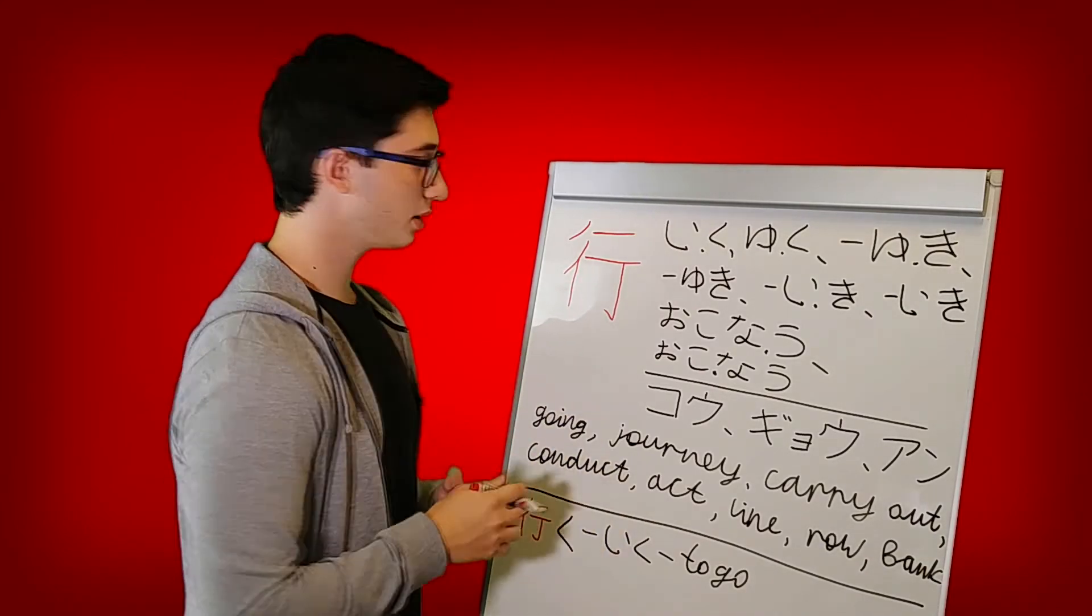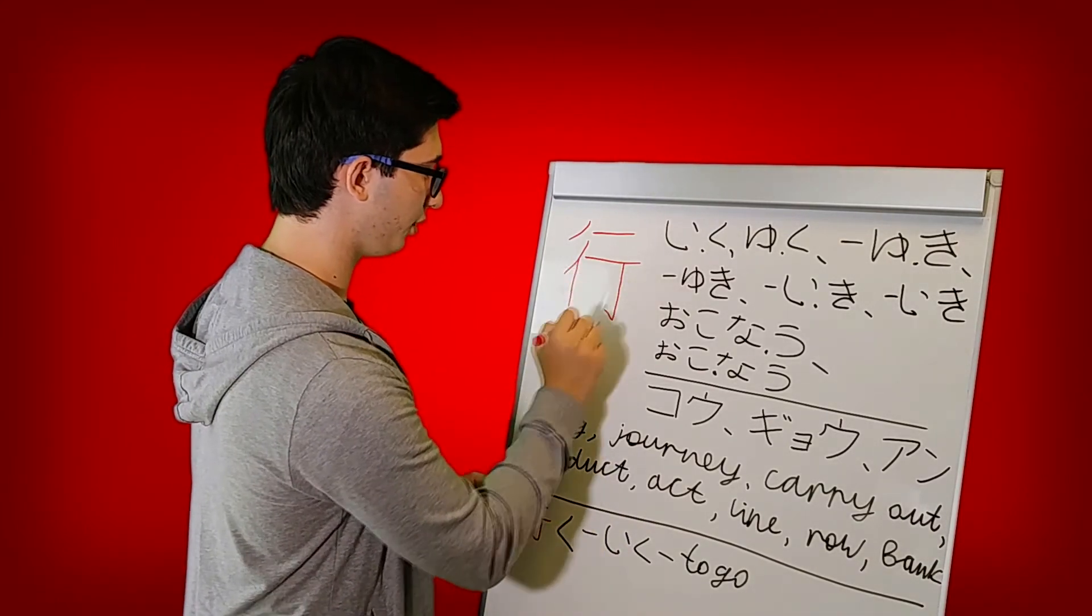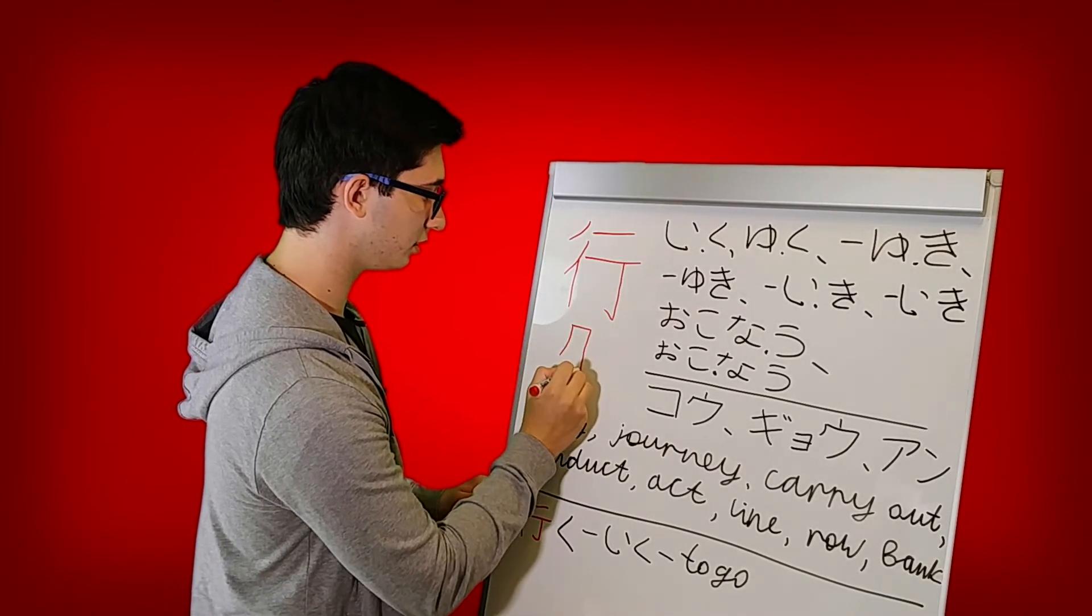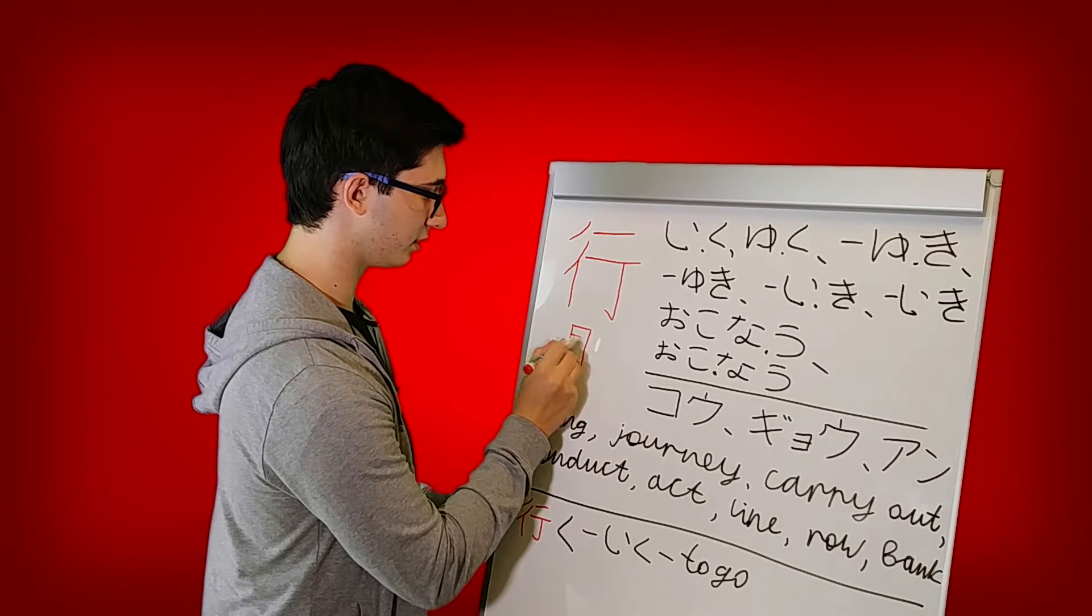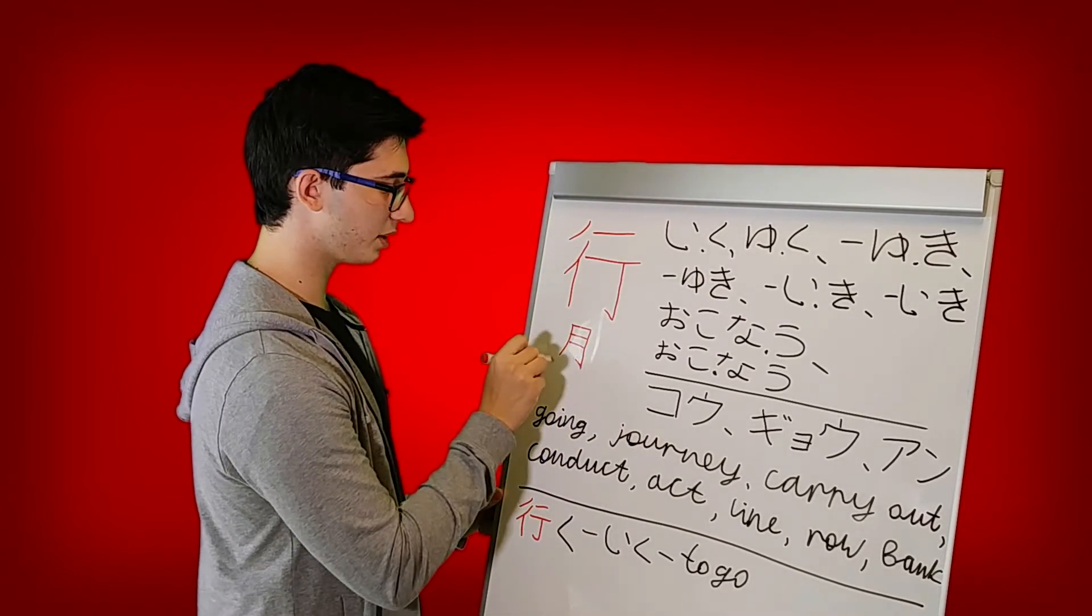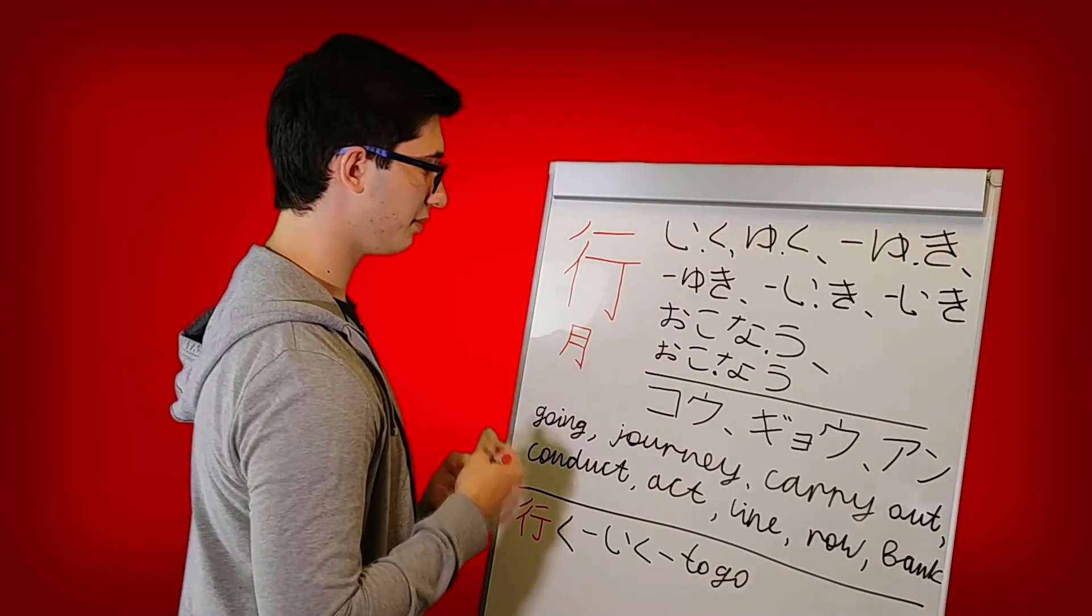If you remember the kanji for moon, we also had that little thing there at the end. So you have this stroke and here like that, right? And then those two strokes. So this thing is the same as that thing. You will see something like this very often in kanji. Many of them use this.